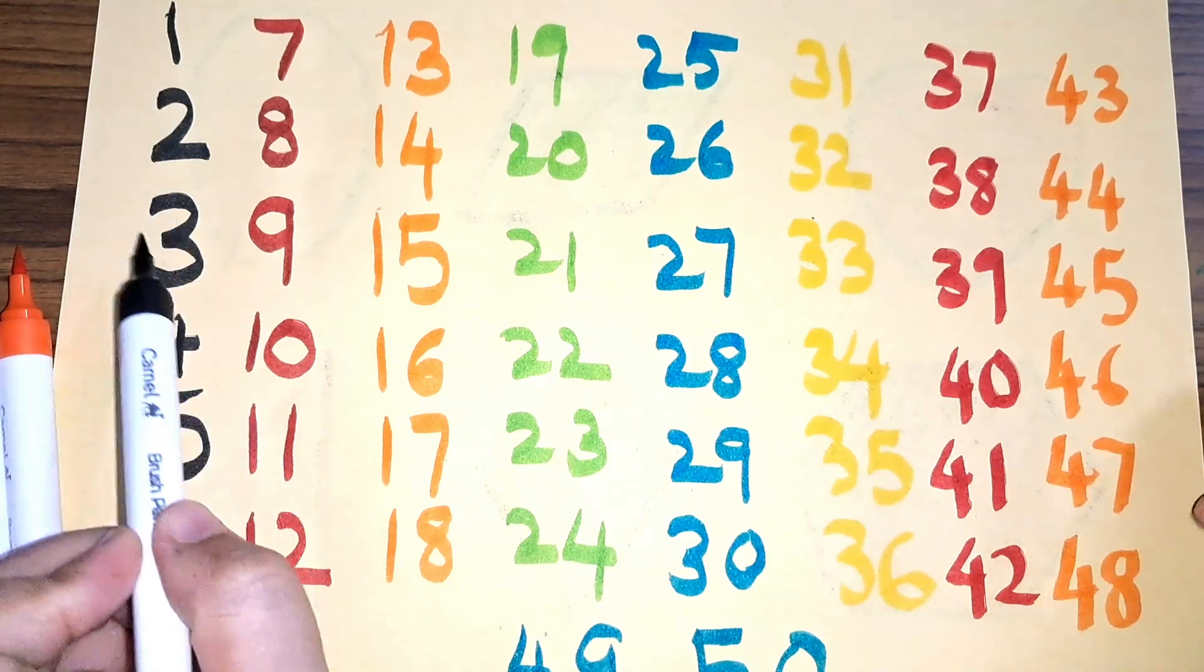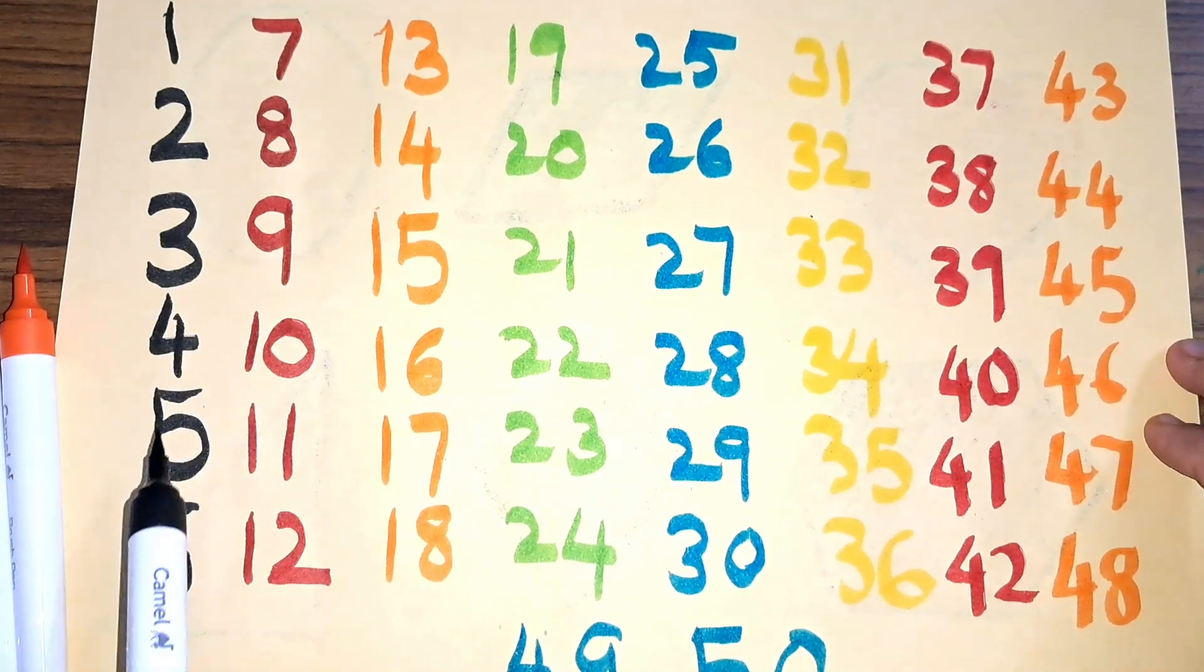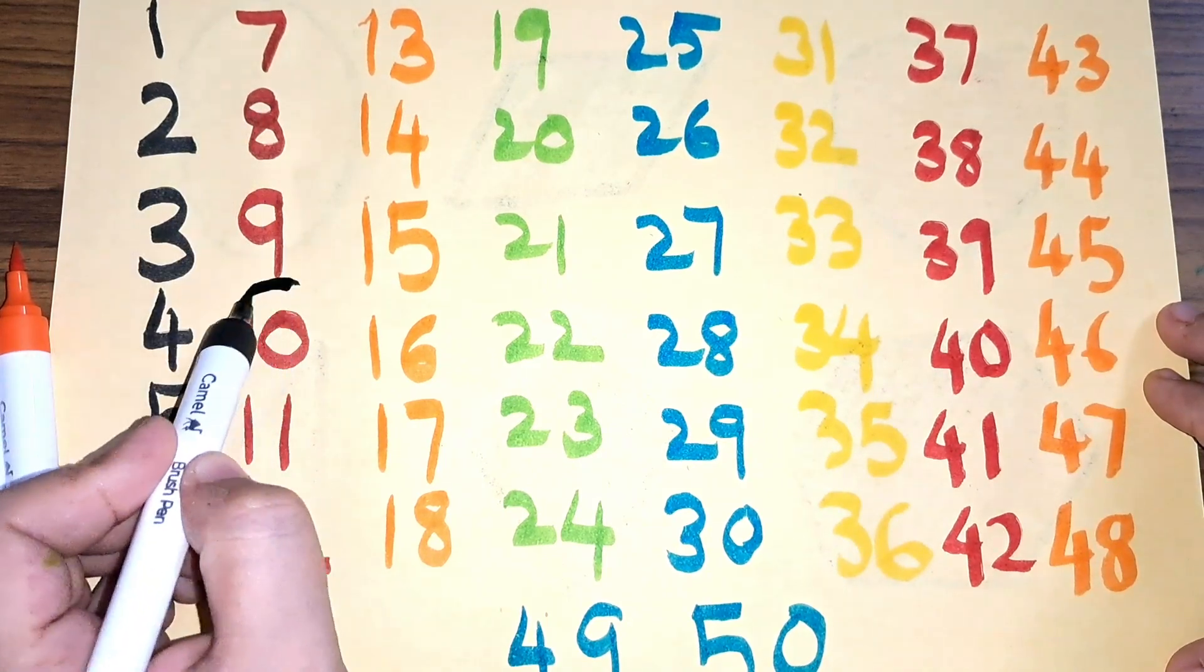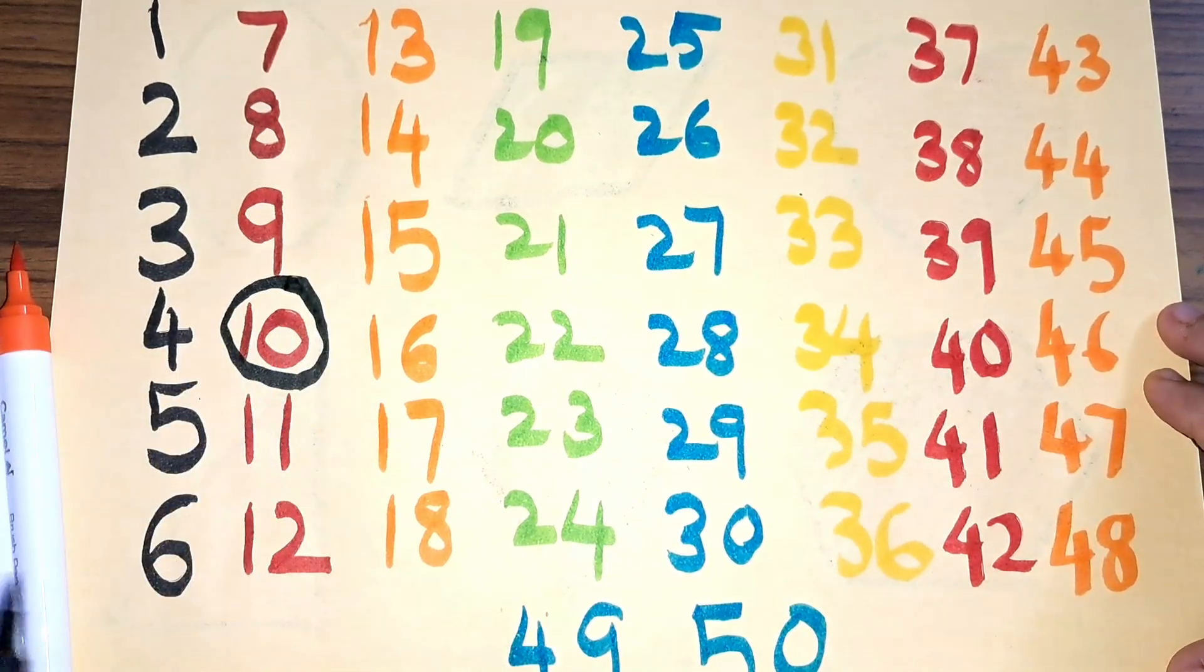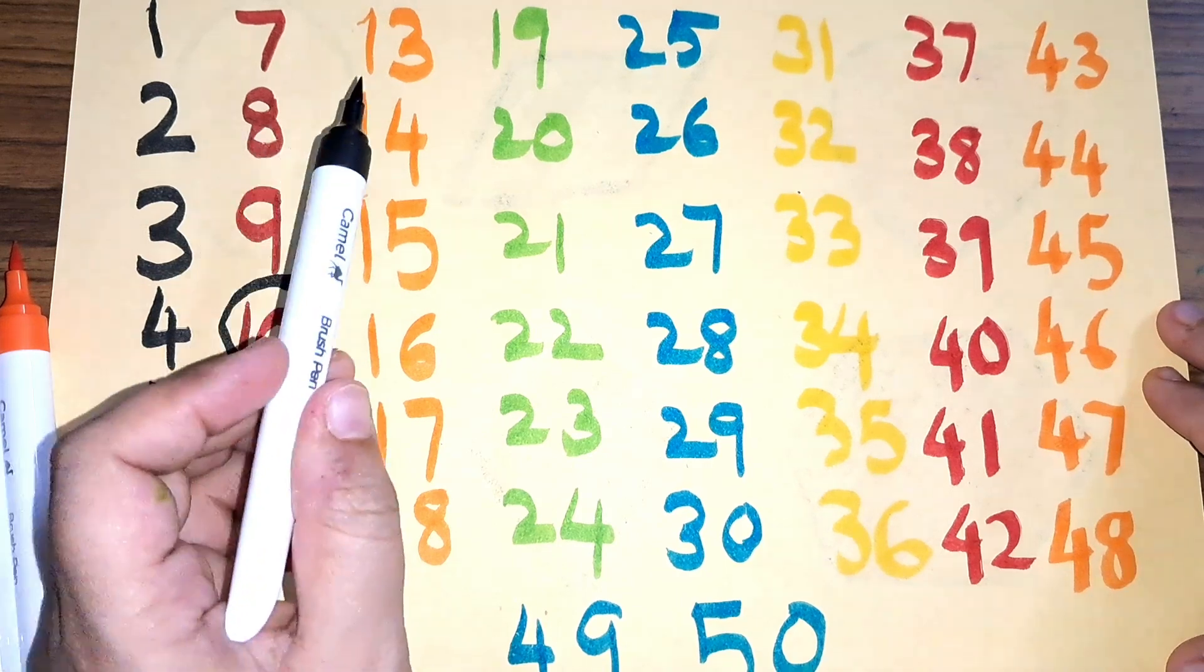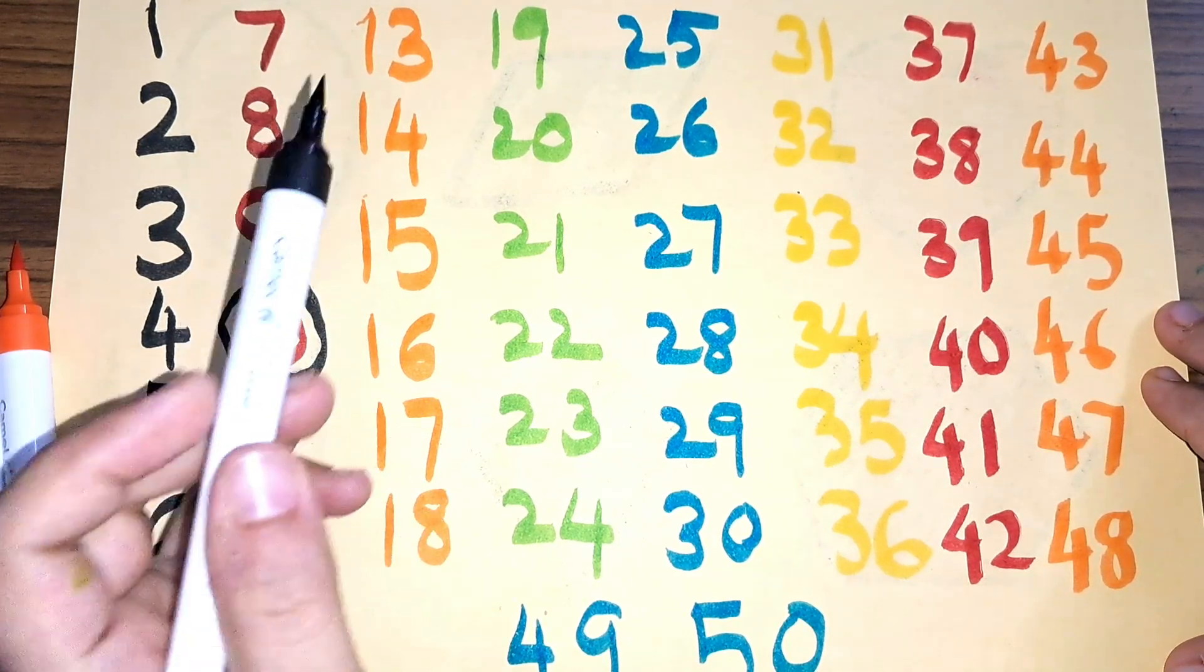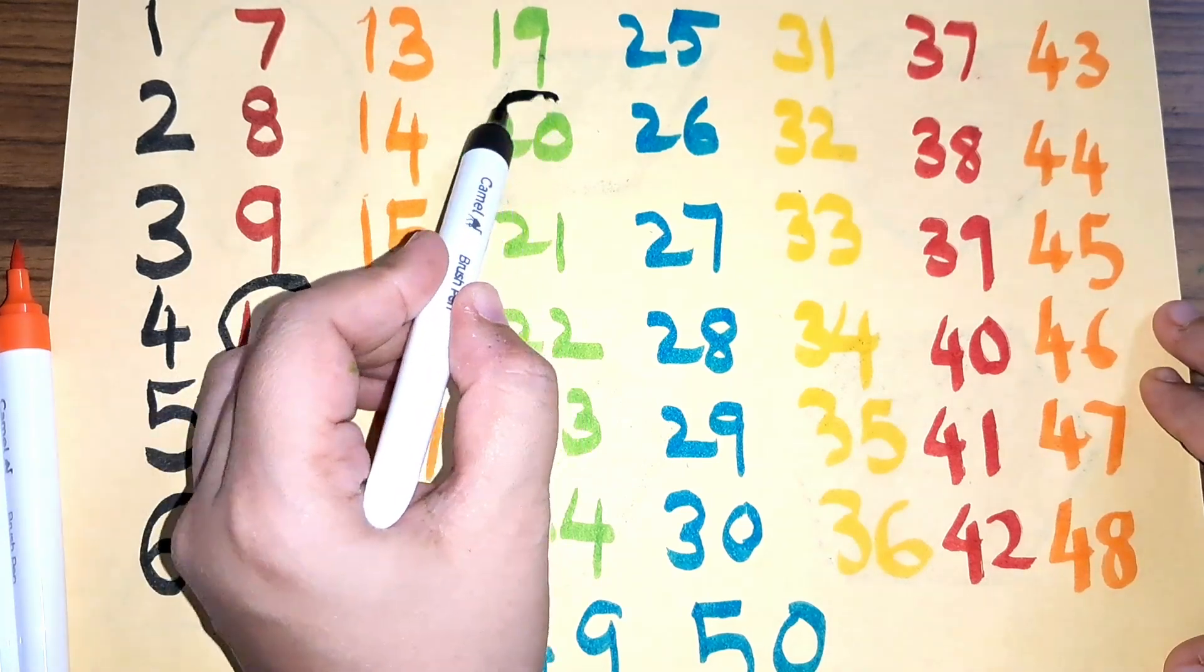One, two, three, four, five, six, seven, eight, nine, ten, eleven, twelve, thirteen, fourteen, fifteen, sixteen, seventeen, eighteen, nineteen, twenty.